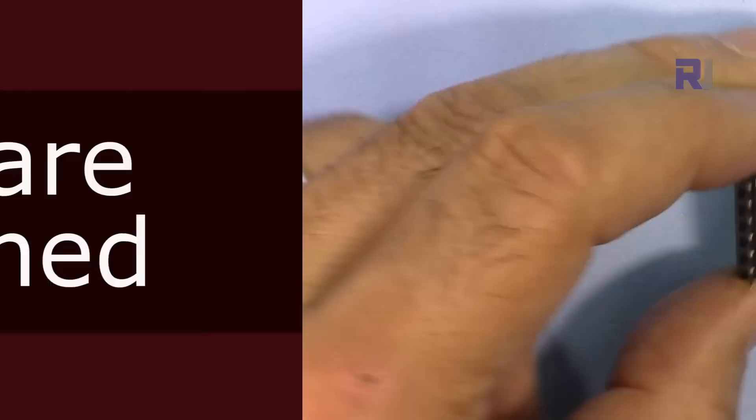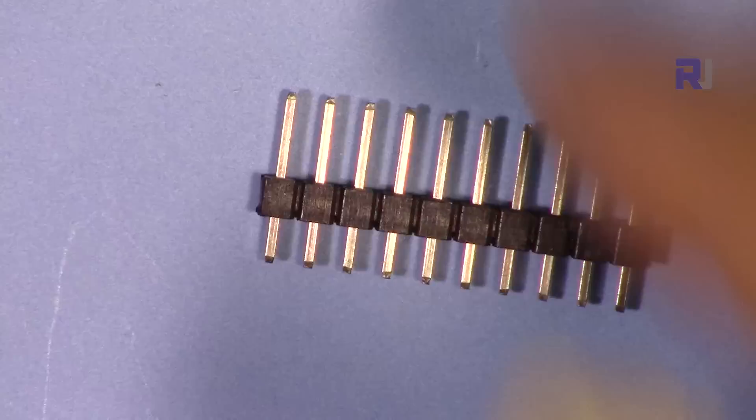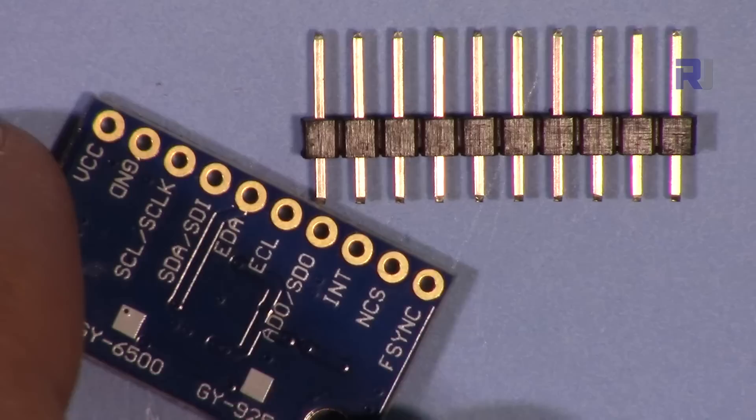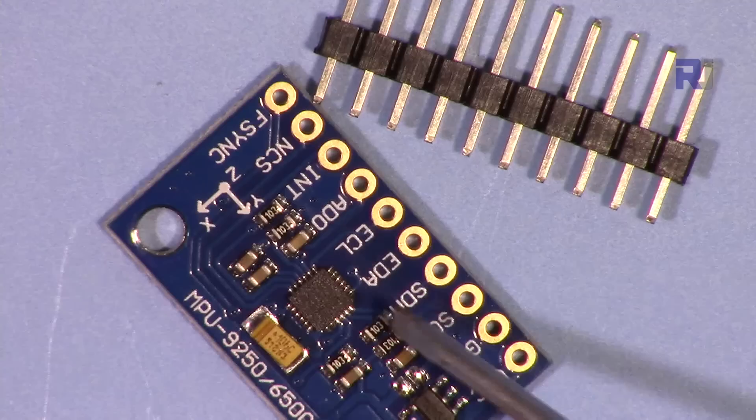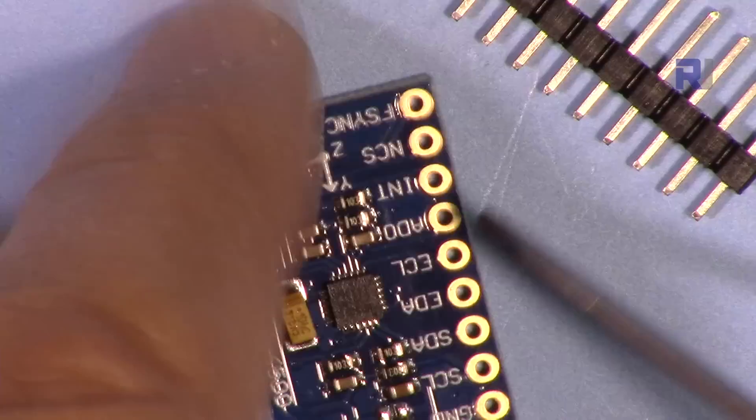It will come usually with this type of male-to-male header so we have to attach it either from this side or to this side depending on how you want to use it. I'm gonna solder it from this side because this side should be up for me so I can understand better X, Y and Z, but it doesn't matter.